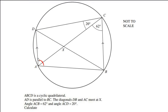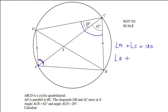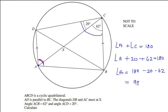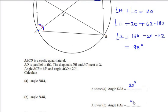Since ABCD is a cyclic quadrilateral and angle A is opposite to angle C, we write: angle A plus angle C equals 180 degrees. Angle C is made up of two angles: 20 degrees and 62 degrees. So angle A equals 180 minus 20 minus 62, which gives us 98 degrees. So angle DAB is 98 degrees, using the cyclic quadrilateral theorem.